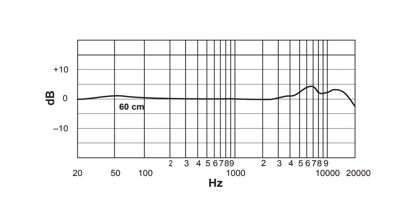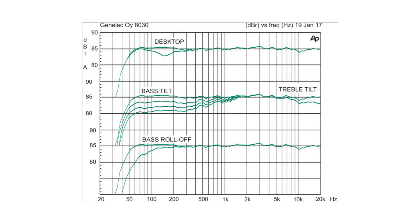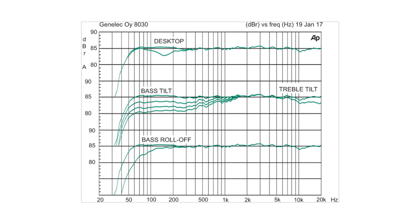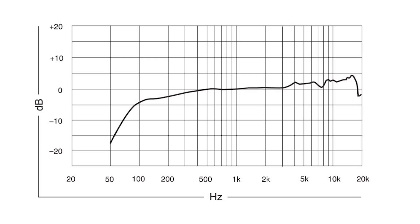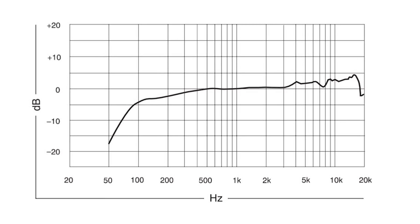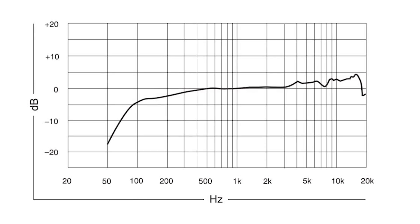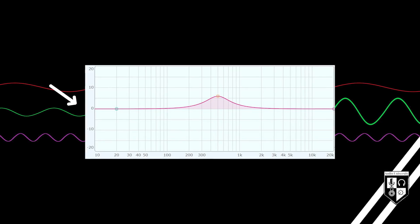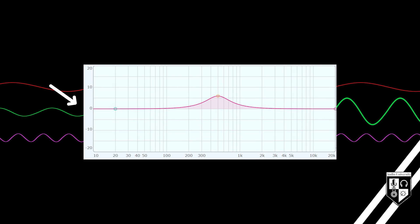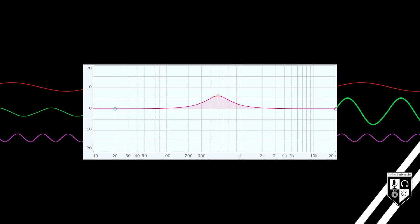The frequency response of a microphone, a speaker, or a pair of headphones describes how the device responds to various frequencies. Looking at the frequency response of a device helps us understand the effect that device has on the frequency balance of signals passing through it. It gives us insight into the difference between the frequency balance of the signal at the input of the device versus the frequency balance at the output of the device.